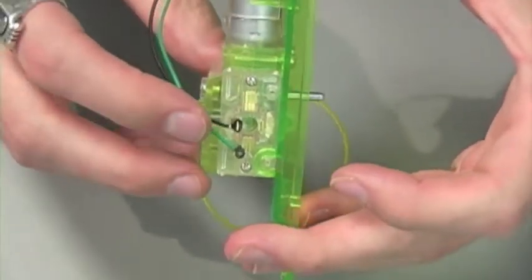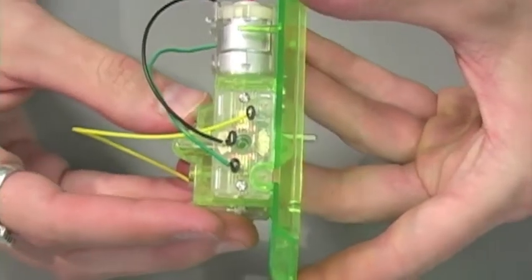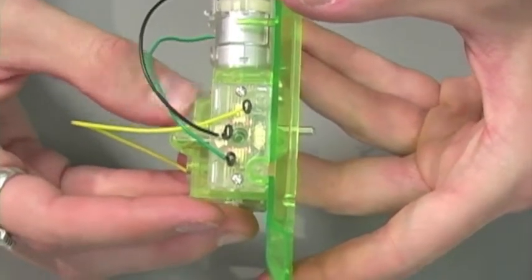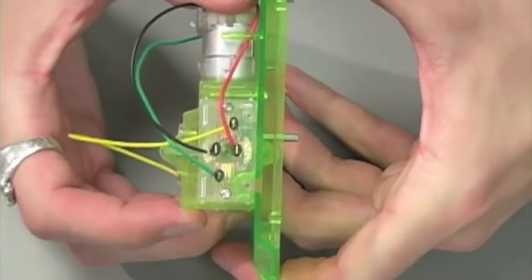Black is going to attach to the terminal closest to the switch itself. Yellow is going to attach to the terminal closest to the motor.